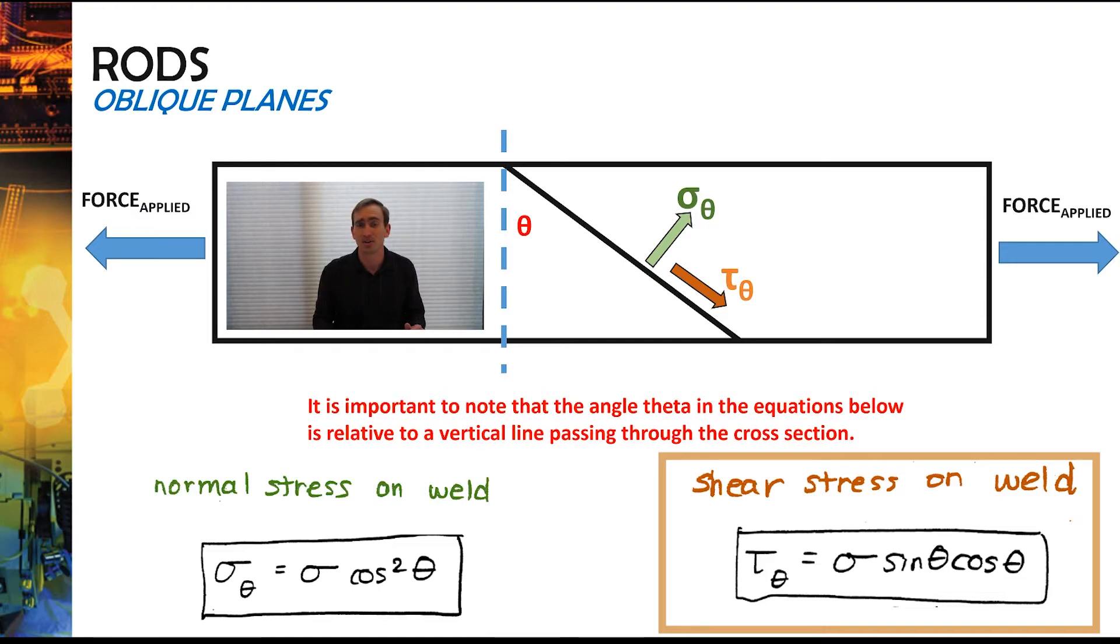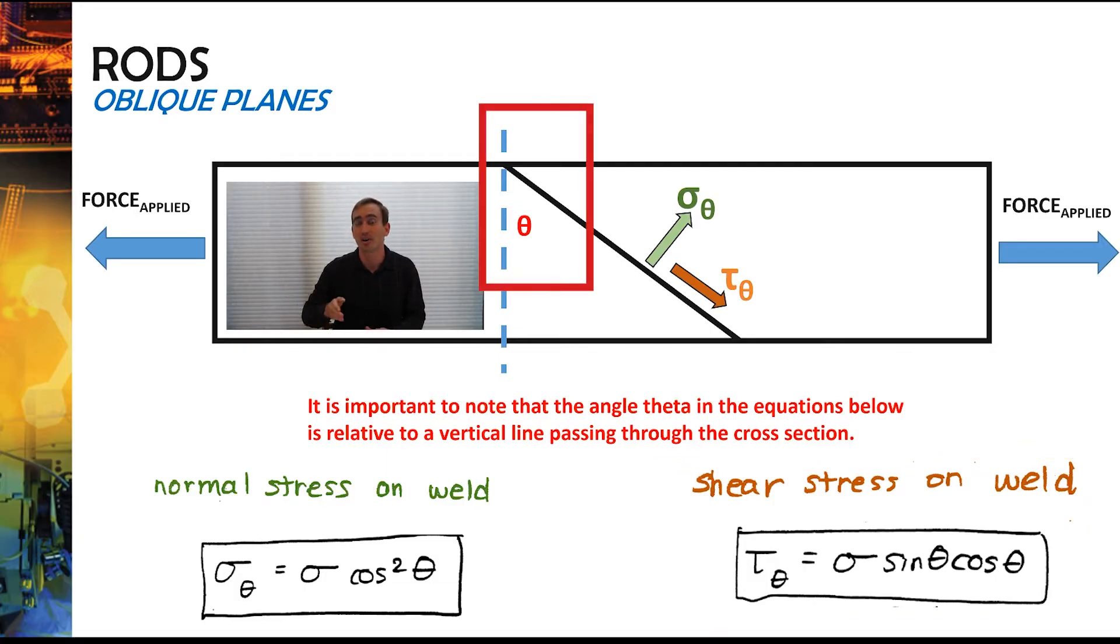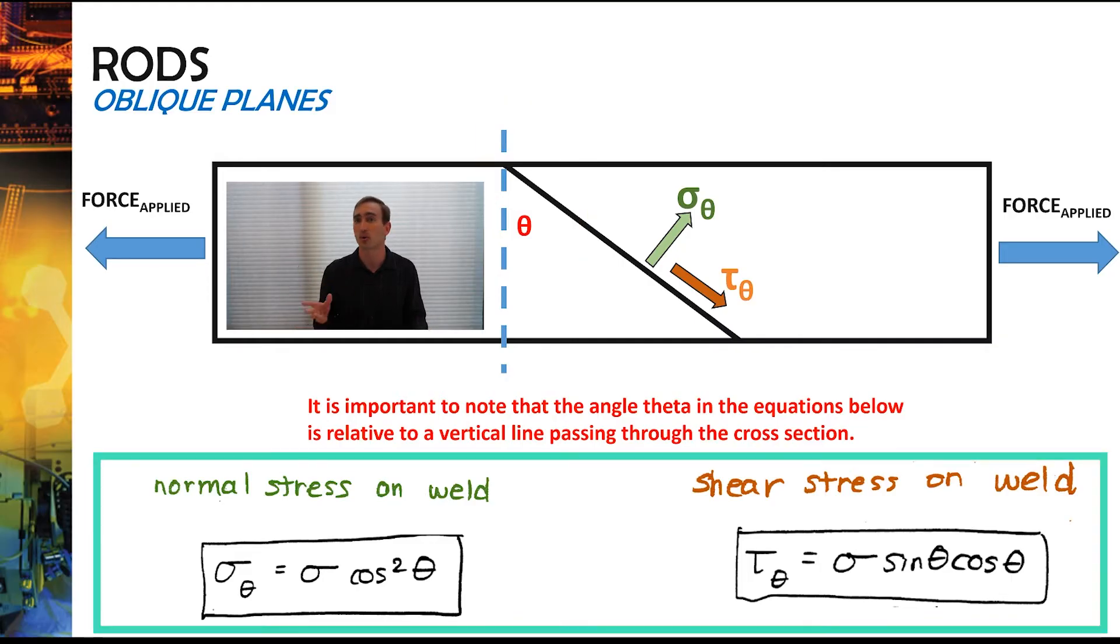The main thing you need to really pay attention to is that the angle theta is relative to a line that passes vertically through the beam itself or the stepped rod. So to compute sigma theta and tau theta in the future problems that we're going to look at, all you need to do is worry about these equations here and be extra careful that you use the correct theta.